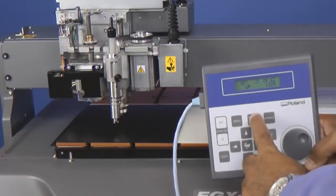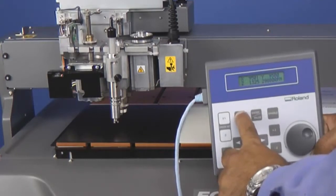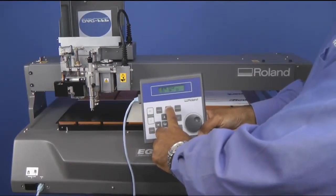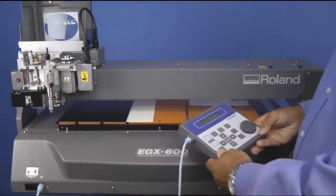We'll now use the Z plus button to bring the Z up off the material. We'll arrow over to Z2 and press the Enter key to set our Z2, which is our clearance. We can then press the menu key until we get back to the Home view, select Home, and press Enter.